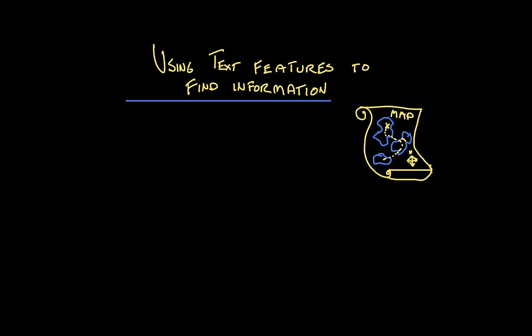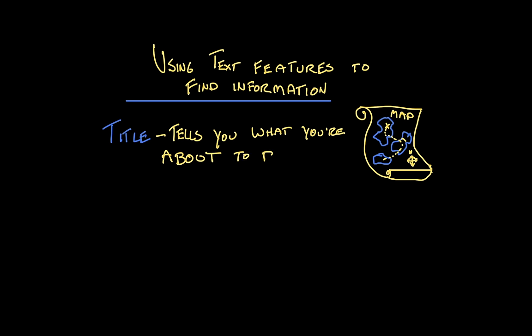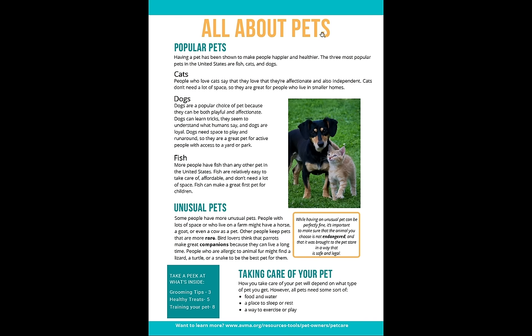So the first text feature I want to talk about today is the title. That's just the name at the top of a piece of writing, and its purpose is to tell you what you're about to read. Let me give you an example. We can see this article here — this text in yellow, this is the title. And it says, 'All About Pets.' What does that tell us about the content of this writing? It's going to be all about pets.